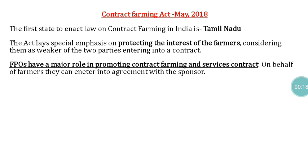The first act is the Contract Farming Act, which came into force from May 2018 onwards. The first state to enact a law on contract farming in India is Tamil Nadu. This act is mainly aimed at protecting the interest of farmers.